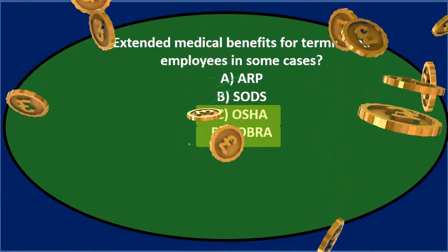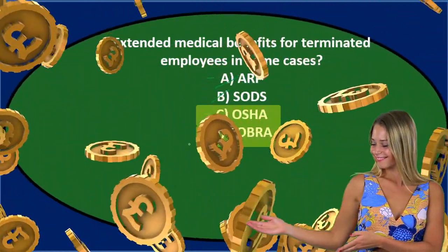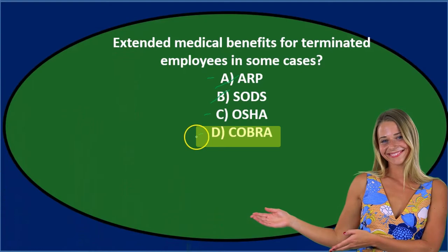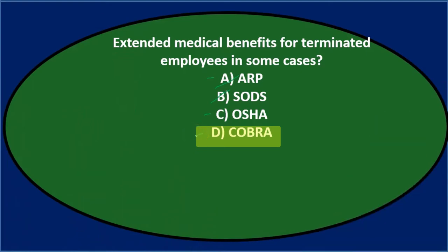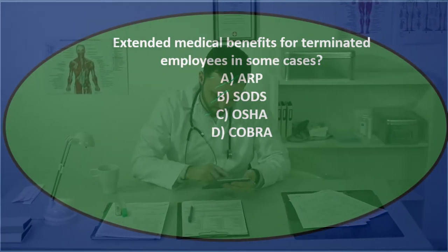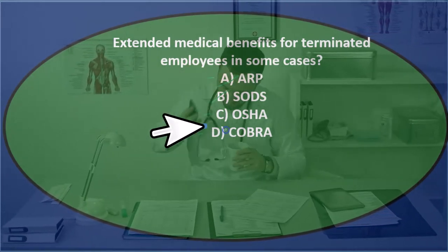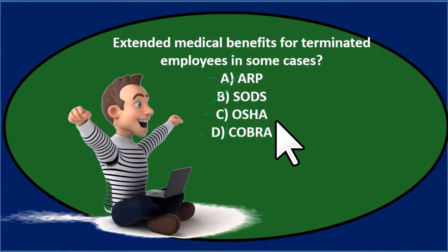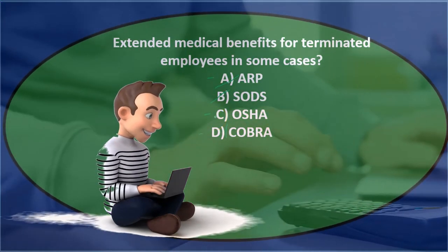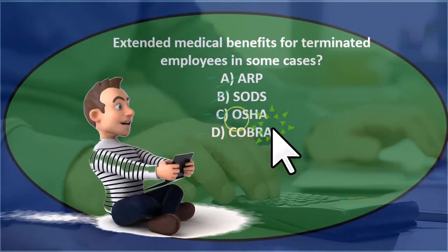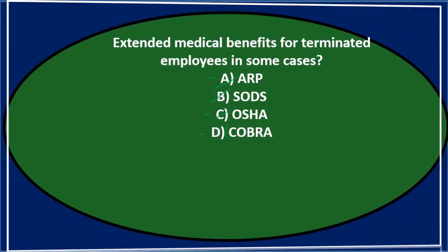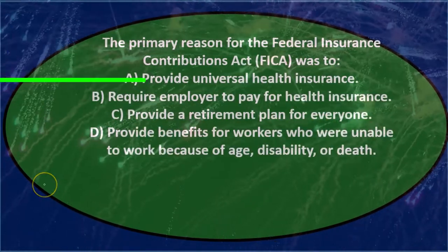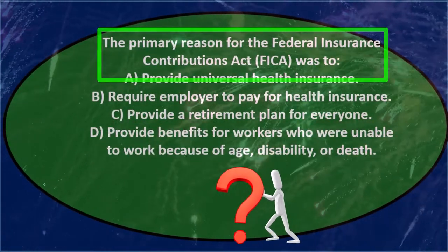Of those two, COBRA is the one that deals with health benefits. The actual term is the Consolidated Omnibus Budget Reconciliation Act, which is probably something we wouldn't recognize if we just saw COBRA, but we could think that COBRA is going to be related to health insurance. Therefore COBRA seems to be the correct answer. OSHA is the Occupational Safety and Health Administration, which could seem health-related, but COBRA is the one we're looking for. Correct answer: extended medical benefits for terminated employees in some cases is D, COBRA.